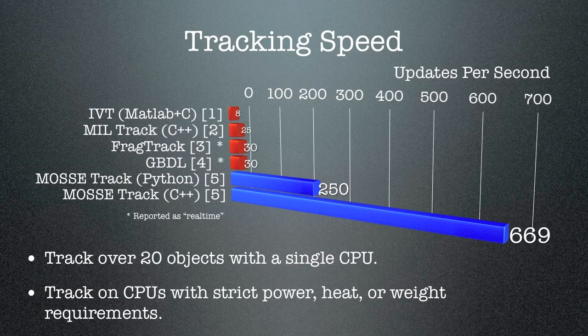One thing that makes this algorithm unique is its speed. If you compare this algorithm to other popular trackers, you'll see that those other trackers have difficulty keeping up with full frame rate videos. In our case, we've got our tracker running much faster than real time. Our research code is written in Python and runs at about 250 frames per second. We've also got a version we're trying to commercialize that runs at well over 600 frames per second.